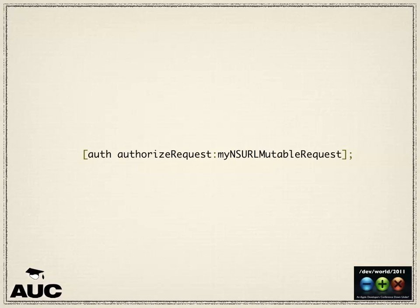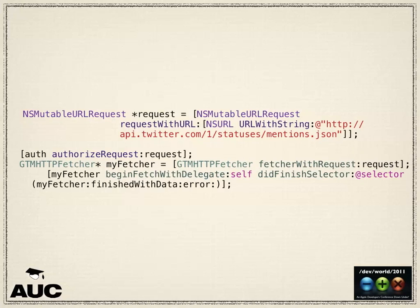This is actually as hard as it gets for doing your own OAuth signing calls. Once that's all done and you have your tokens, signing a request is just one line of code. You create your API call with an NSMutableURLRequest, set it with the key-value pairs for whatever you want, call the auth object, pass in the request, it signs it with all the relevant OAuth tokens, and then you send it off using the fetcher.